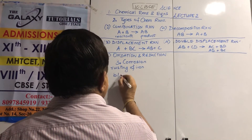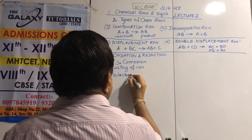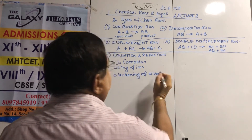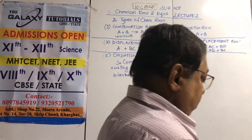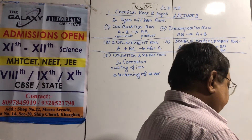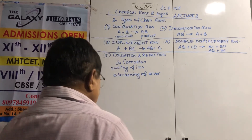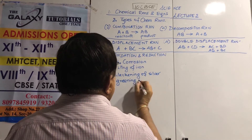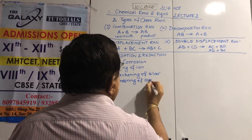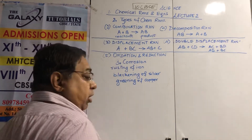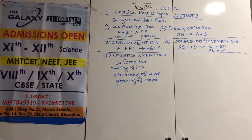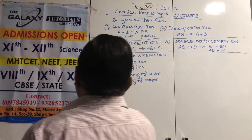Similarly, silver articles become black over time — blackening of silver. And copper turns green — the Statue of Liberty was originally shining brown copper but today is greenish-white. These are all examples of corrosion.